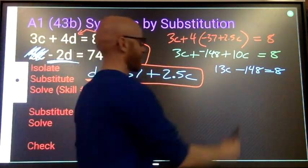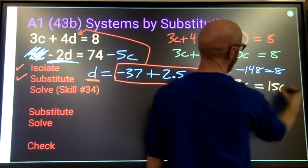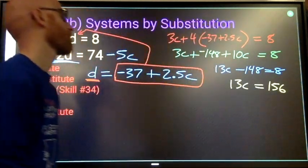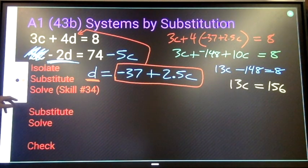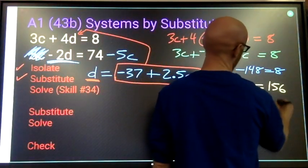Add 148 to both sides. 13c equals 156. And last but not least, divide both sides by 13, and we will have c equals 12.